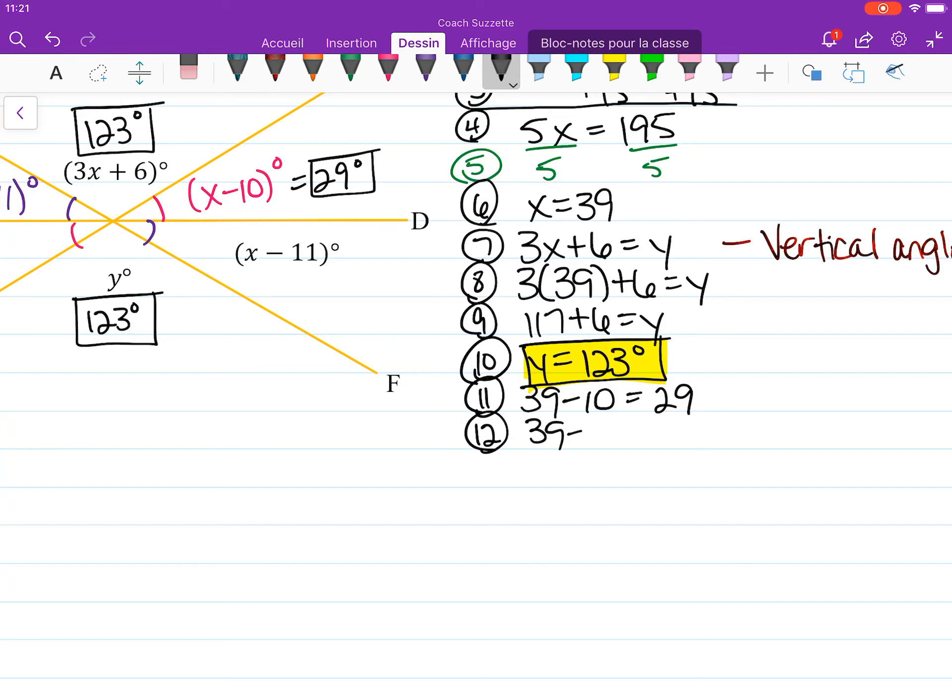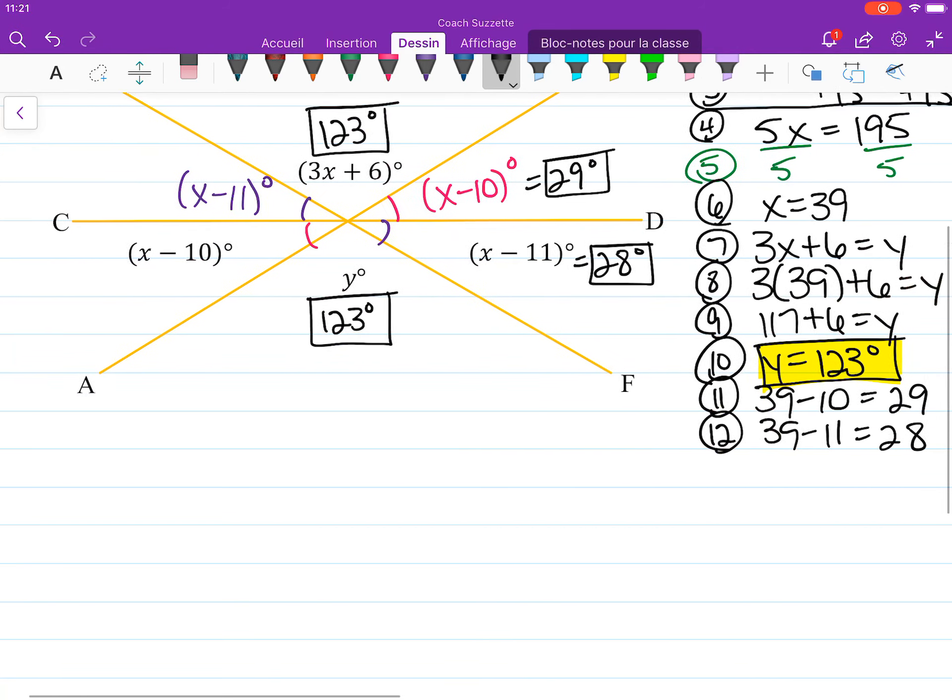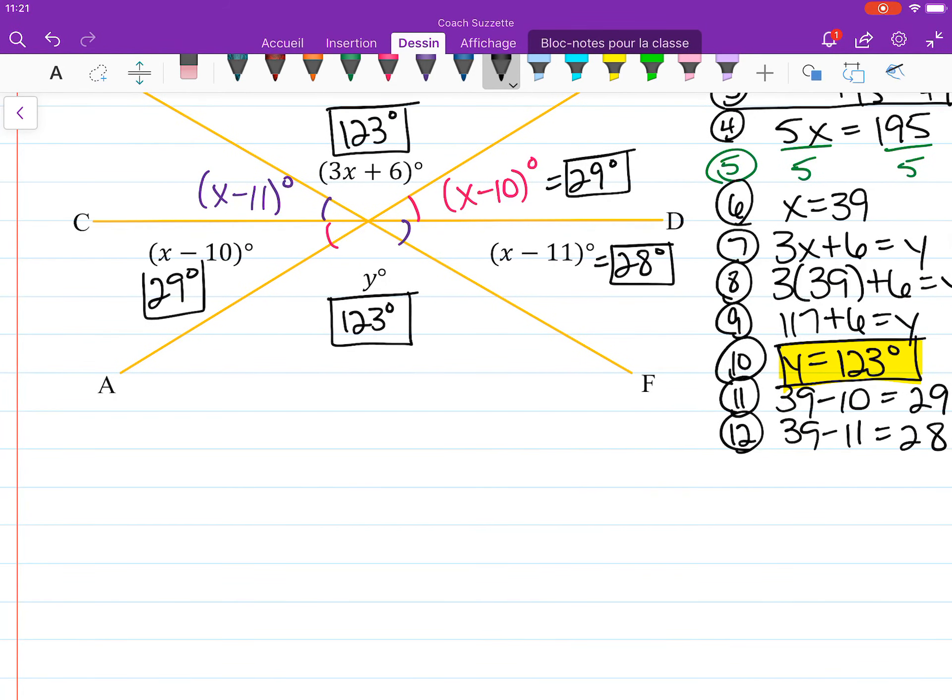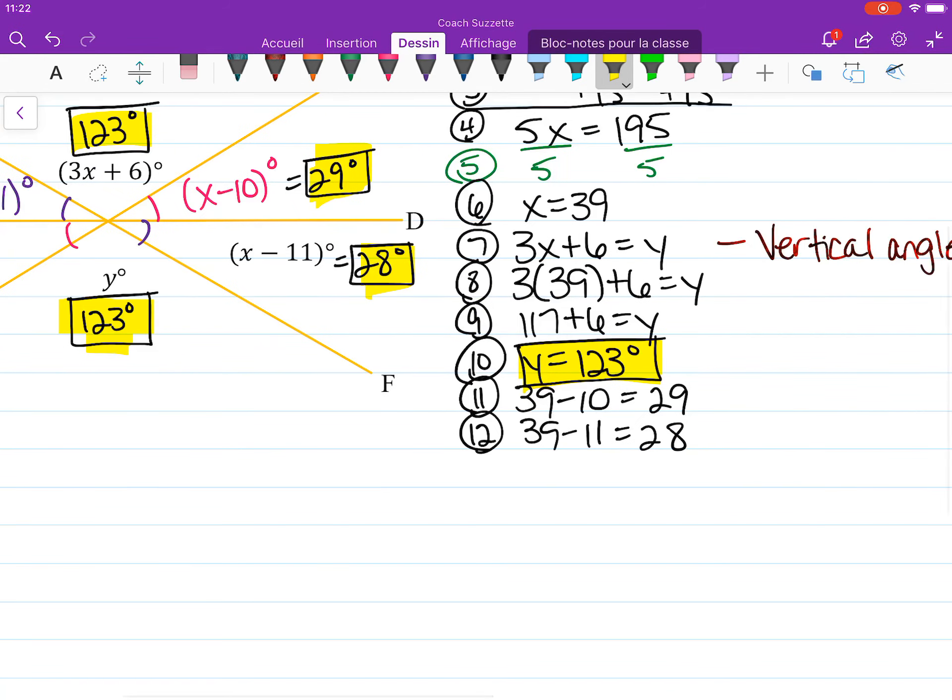And then 39 minus 11 is 28, and so this is 28 degrees. And we're done.